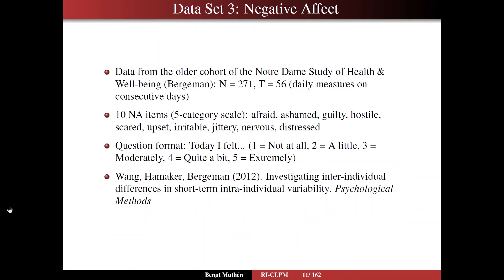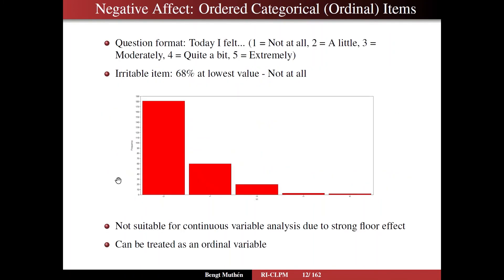The third dataset concerns negative affect from the older cohort of the Notre Dame Study of Health and Well-Being — Cindy Bergman's study — with 271 participants from an intensive longitudinal design with 56 consecutive daily time points. The study includes 10 negative affect items all on a five-category scale: not at all, a little, moderately, quite a bit, and extremely. Items include feeling afraid, upset, irritable, nervous, and others. The reference is Wang et al. in Psychological Methods.